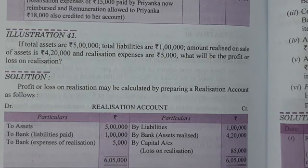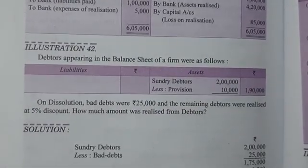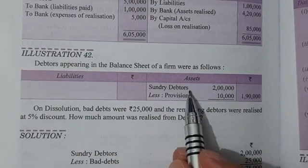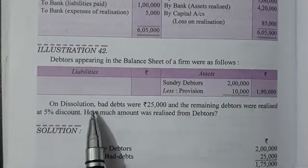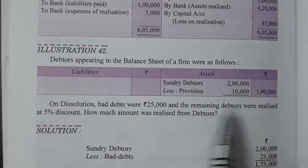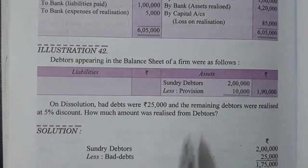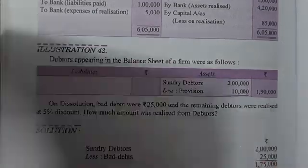Now look at Illustration 42. Debtors appearing in the balance sheet of a firm: debtors given and provision for bad debts of 1 lakh 90. On dissolution, bad debts were 25 thousand and remaining debtors were realized at 5% discount. How much amount was realized from debtors?